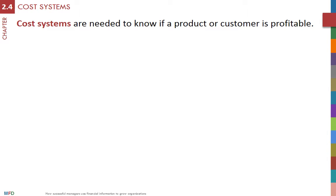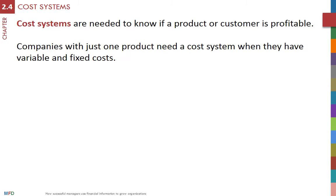When a company has only variable costs, it makes money whenever the selling price per unit is higher than variable costs. When a company has also fixed costs, measuring profitability is not as simple anymore.